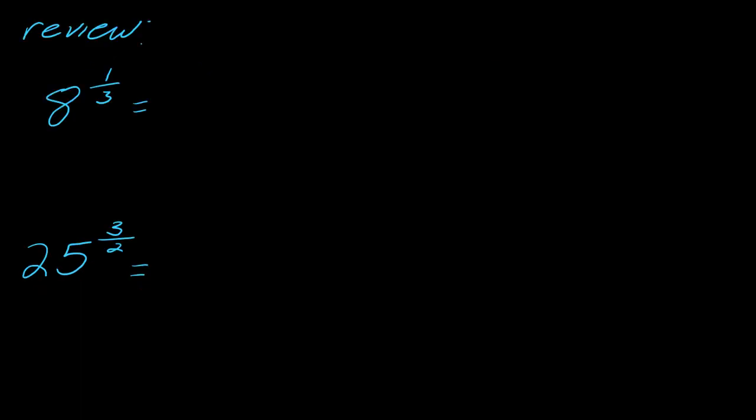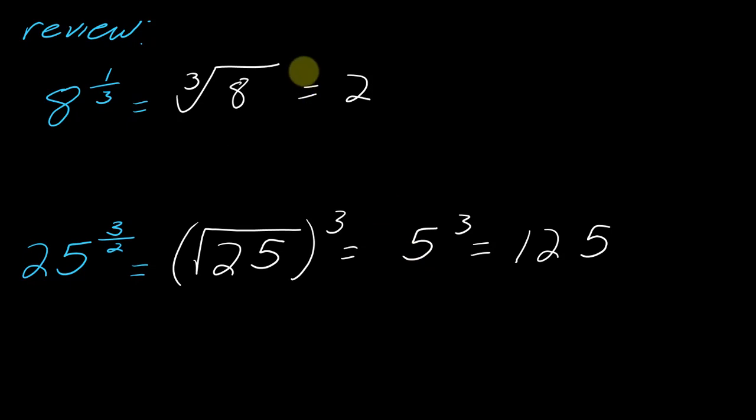Okay, so the first thing that we need to talk about is just we actually need to do a little review. So pause here and just make sure that these problems are good. So to do 8 to the 1/3rd, that is the same thing as the cube root of 8 which is just 2. And then for 25 to the 3 halves, remember you take the square root first and then you cube. So this ends up becoming 5 cubed and so this is 125. If you are not comfortable with this or if you don't know how to do this, then you might want to consider watching some videos on working with this before you start this video. I'll have some links to that in the comments.